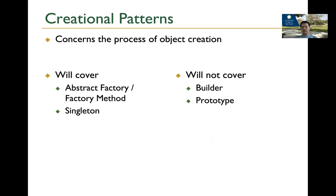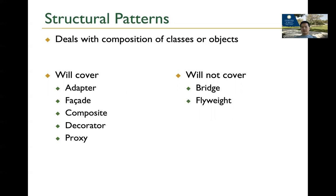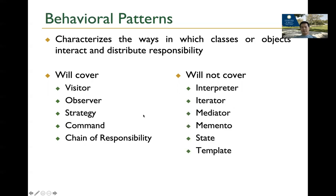There are 23 patterns from the classical book, and later on more patterns were created by other people, but these 23 are the most classical. There are three categories. We have patterns about how we create objects and classes — we'll primarily focus on singleton and object factory. There are also patterns about structures, like composite, facade, adapter, and decorator pattern, which is one of my favorites, and also the proxy pattern. On the behavioral side, the main patterns we'll focus on are visitor, observer — which is my favorite — strategy, command, and chain of responsibility.